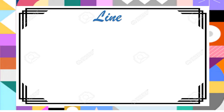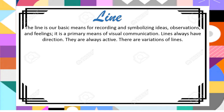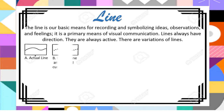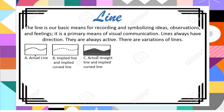Line is our basic means for recording and symbolizing ideas, observations, and feelings. It is a primary means of visual communication. Lines always have direction and are always active. There are variations of lines: actual line, implied line, implied curved line, actual straight line, and line created by an edge.